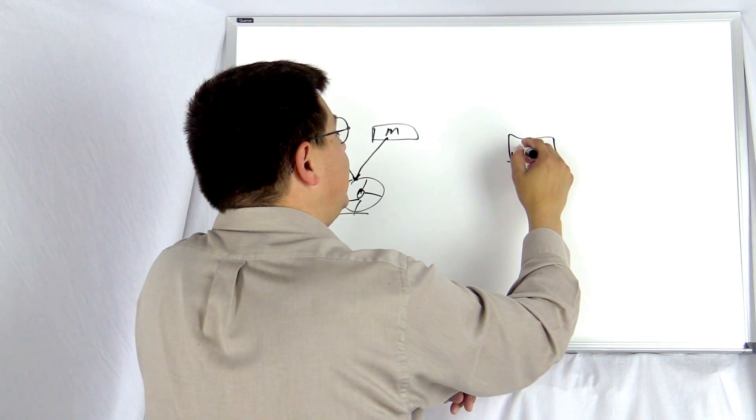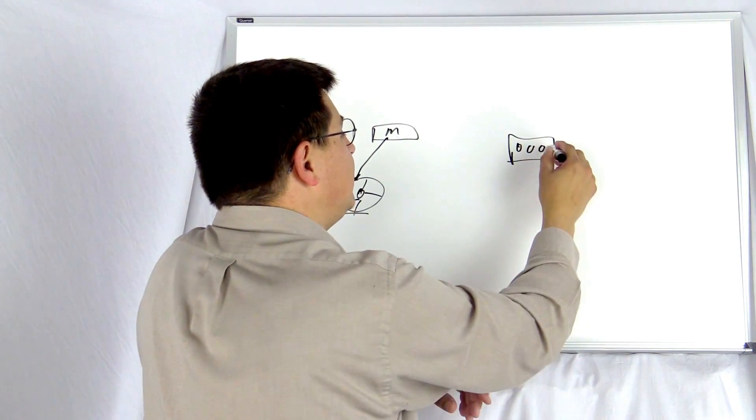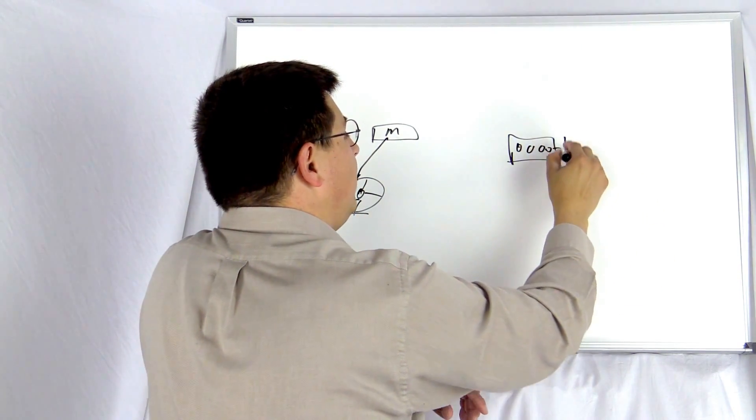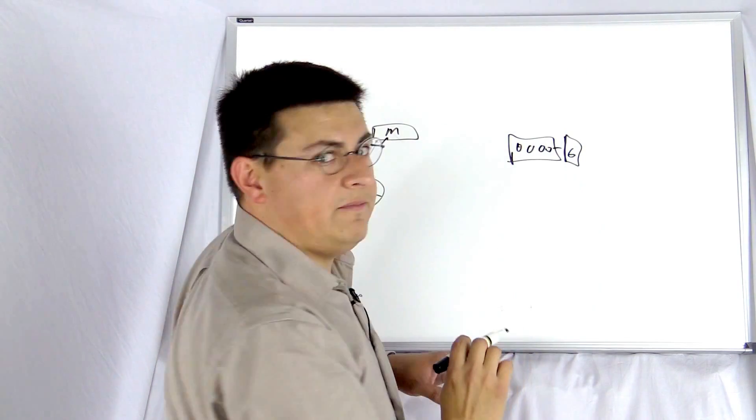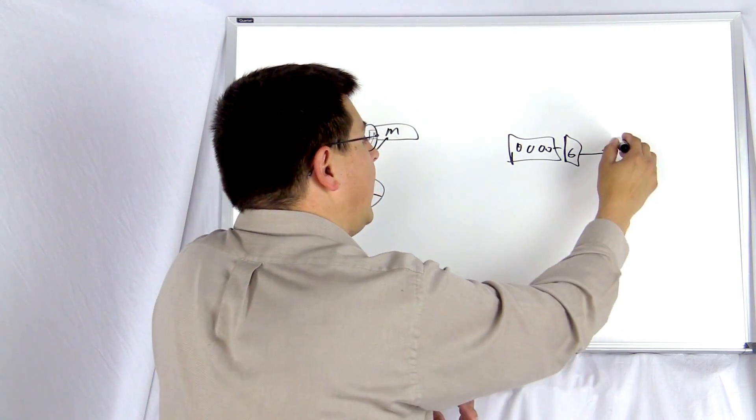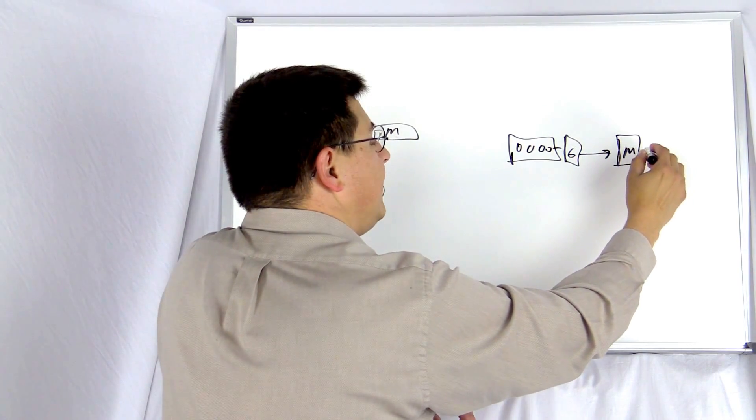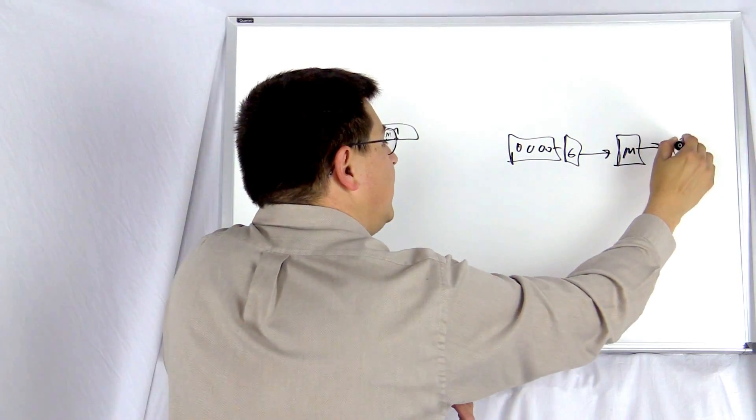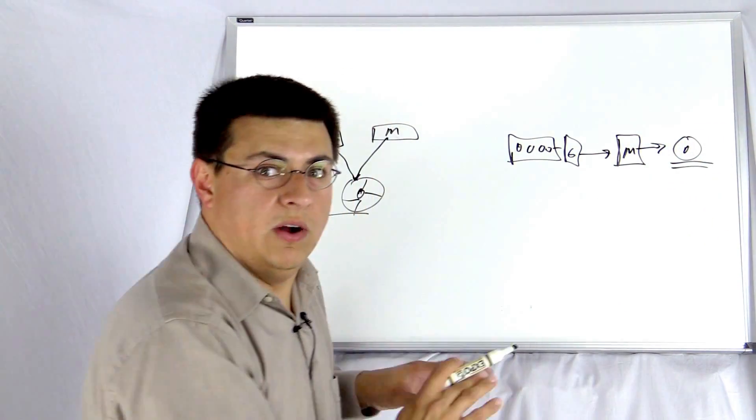In a Honda Accord Hybrid, the engine is over here. This is a four-cylinder engine, and the engine is connected only to a generator like that. Now, the generator generates electricity and sends it via an electrical path to a motor, and that motor then powers the wheel out there on the road.